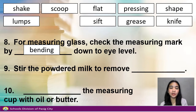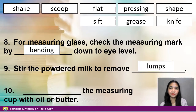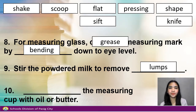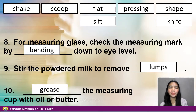Number 9. Stir the powdered milk to remove blank. Answer: Lumps. And number 10. Blank the measuring cup with oil or butter. Answer: Grease.